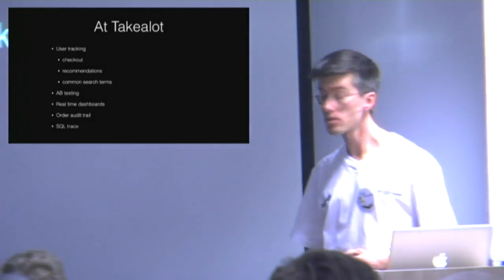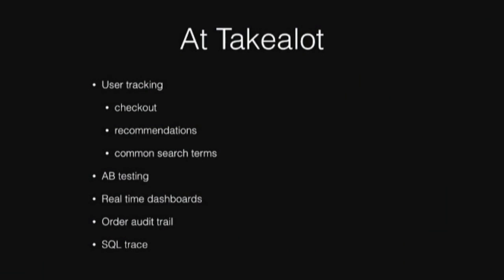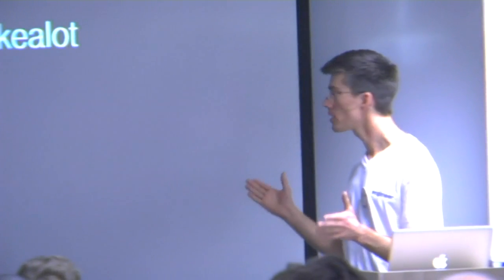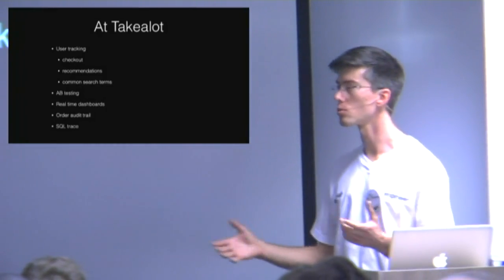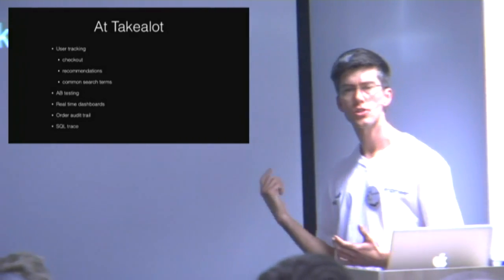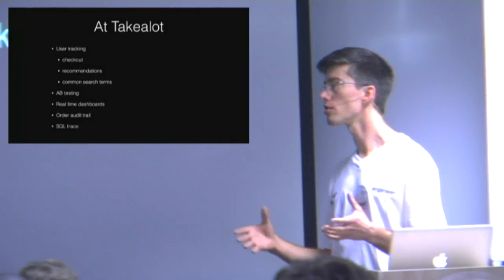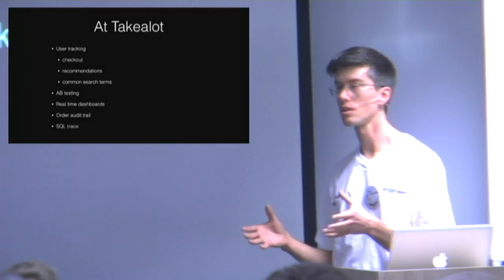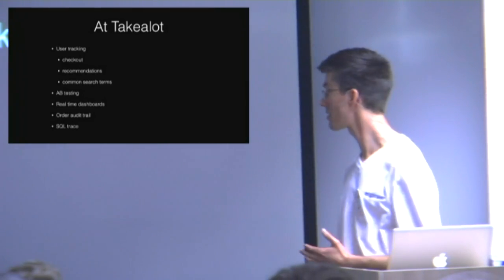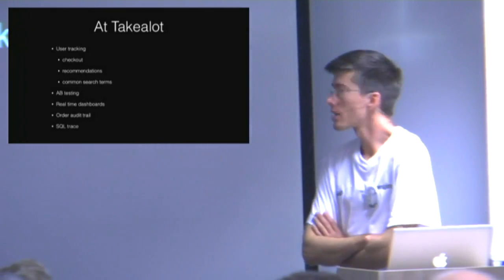These are the things we've been using Kafka for so far. User tracking — that's essentially Google Analytics but done in-house rather than giving it to Google, because we have better control over our own data. We use it to see what's happening in the checkout process, which is terrible, so we want to figure out where people drop off. The UX people redesign based on that and then you repeat — monitor the new process and see what's going on.